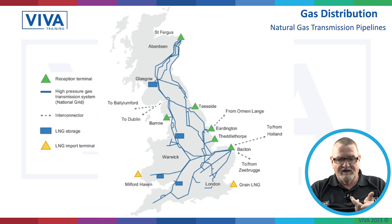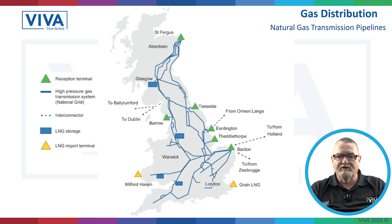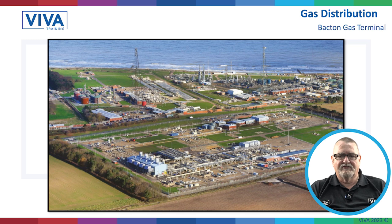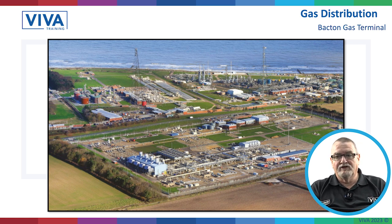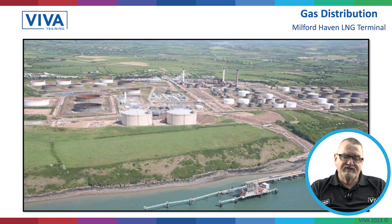Looking at the UK distribution side, we've got Milford Haven which is a liquid natural gas terminal, and then we've got Grain, which is down towards the Isle of Dogs — also a liquefied natural gas terminal. And we've got the Bacton terminal, which is where a lot of the European pipelines come into and where gas is processed and refined before being sent out through the UK distribution network into our own homes. At Milford Haven they take the liquid natural gas, store some as liquid and some as gas, and then put it into the UK network.